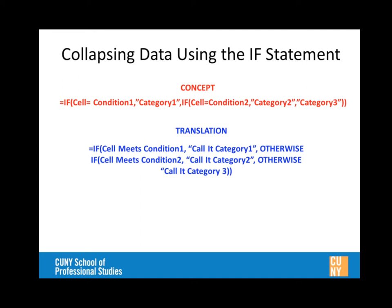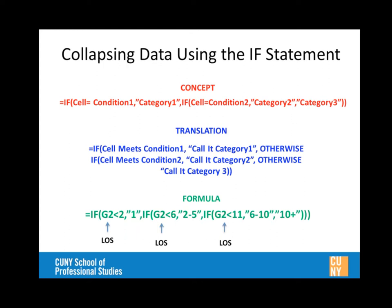Here's the actual formula: equals IF — if the length of stay is less than two, categorize it as 'one' (in quotes). Otherwise, if the length of stay is less than six, call it 'two through five'. Otherwise, if the length of stay is less than eleven, call it 'six through ten'. And if none of those conditions apply, call it 'ten plus'. Notice three closing parentheses at the end — whenever you open a parenthesis you must close it, as your algebra teacher once said.